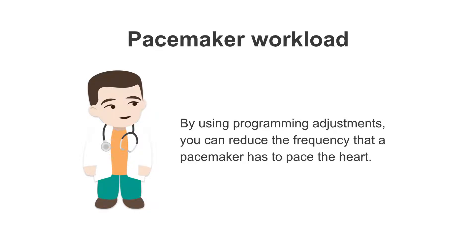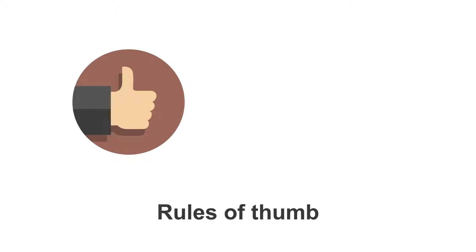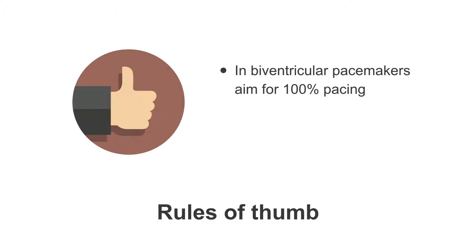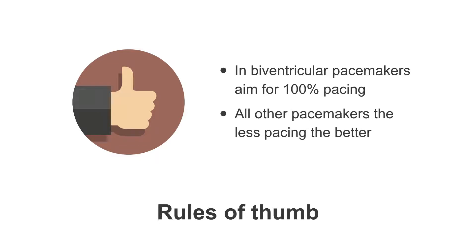This is something we need to bear in mind. There are two rules of thumb, one of which we've covered already. In a biventricular pacemaker, we aim for 100% pacing — we want to be delivering that therapeutic, synchronized RV and LV contraction 100% of the time. In all other types of pacemaker, the less pacing that treats a patient's symptoms, the better.